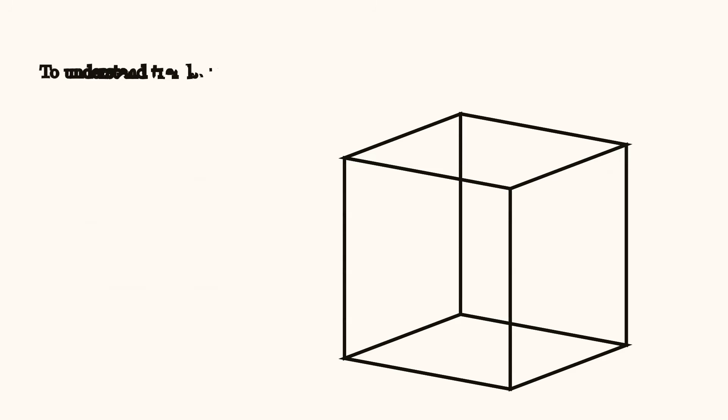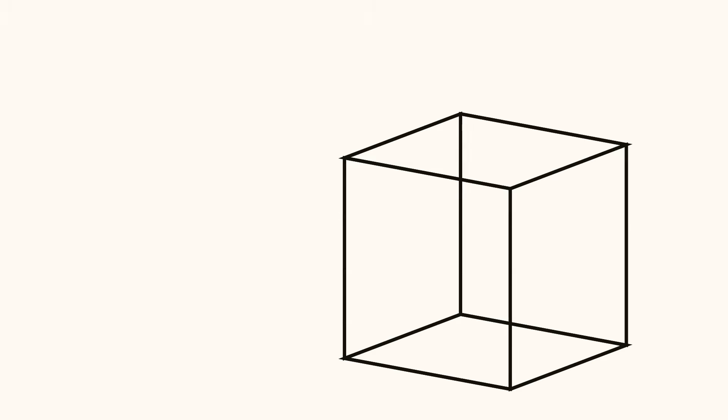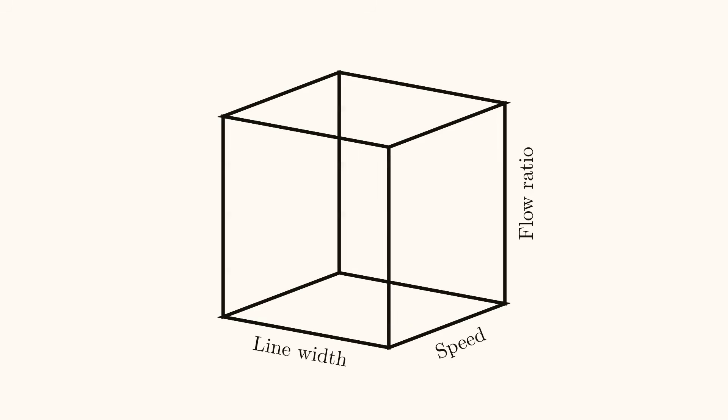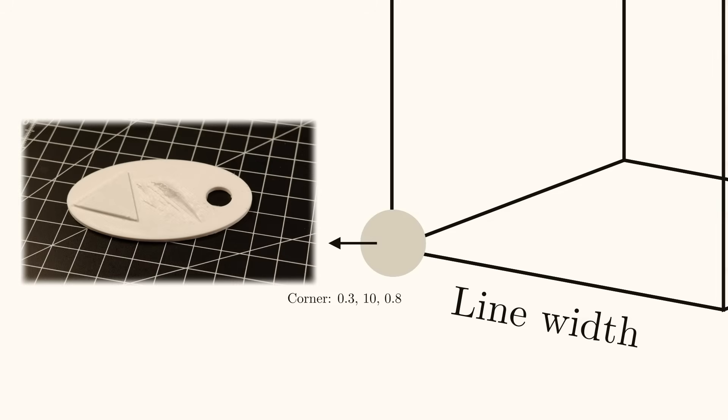Obviously, nobody does this because we can intuitively understand that you can see the broader patterns with way fewer samples. This perspective lets us massively reduce the combinations necessary for our experiments. When you look at this design space, you might notice a few things. For example, the parameters at the extremes of this design space, the corners, are more likely to cause failure.